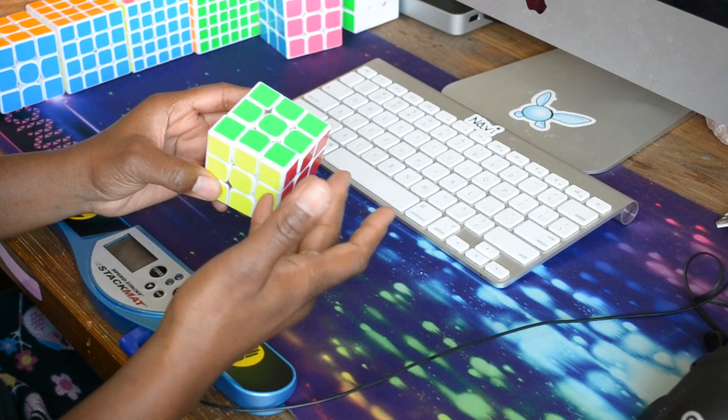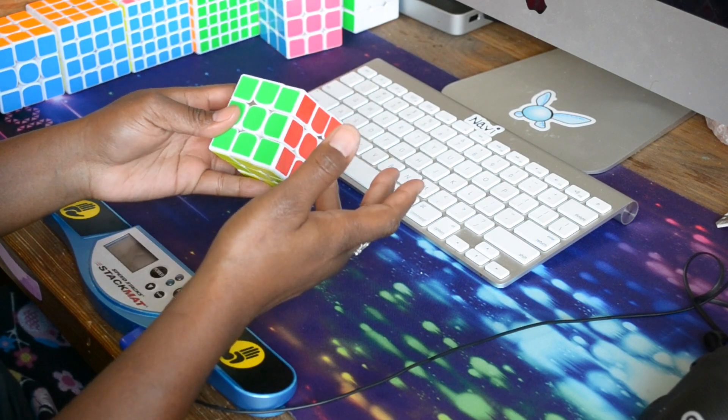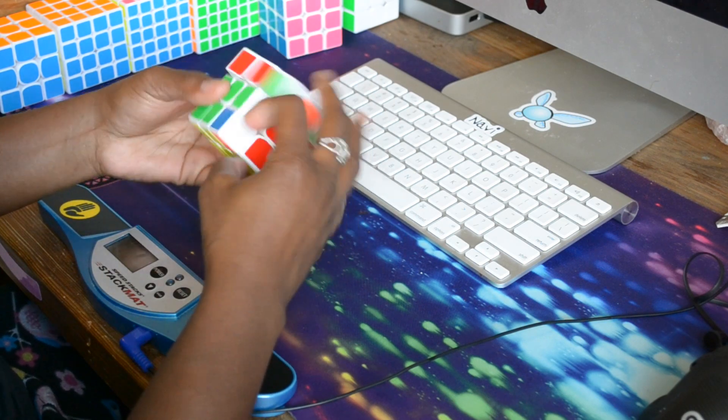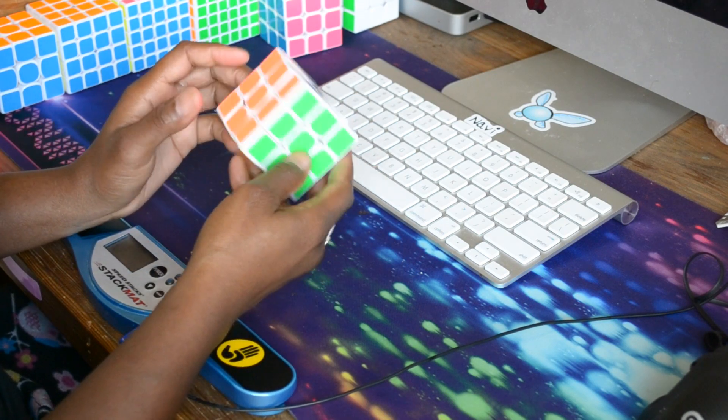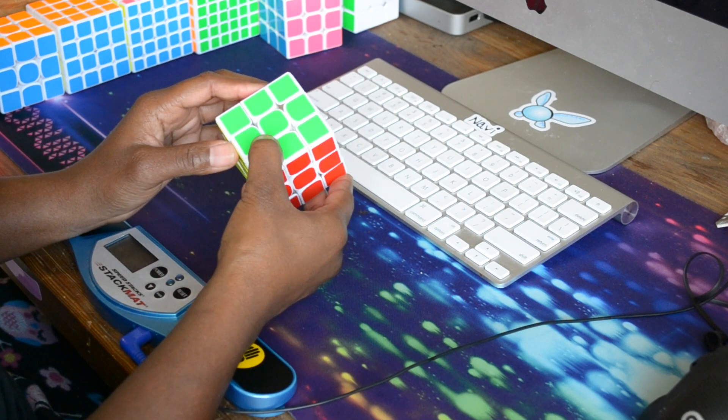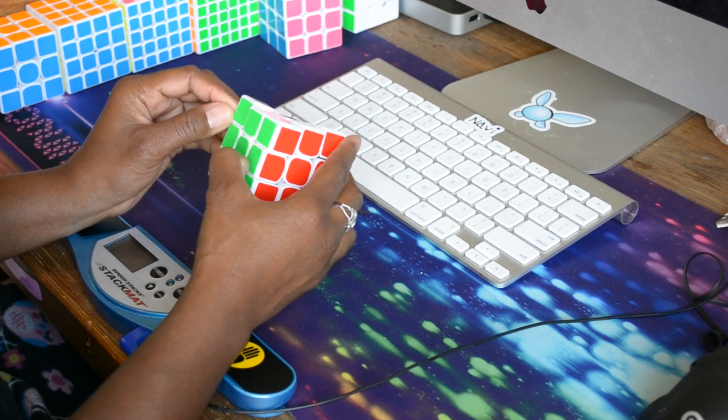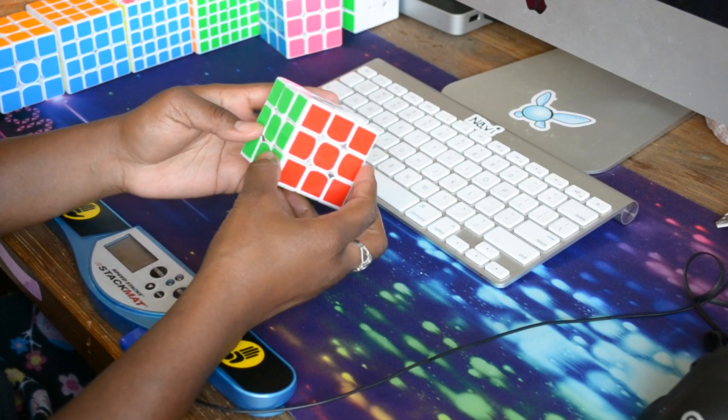I knew it was gonna be really fast once I lubed it. And that's why I over lubed it. But that didn't even help. After a few solves, this thing got super fast anyways. You can probably tell that I don't really have much control over it. It's one of those cubes where you're gonna have to kind of change your turning style to get used to it. But I don't want to. I don't think I'm gonna make it my main.